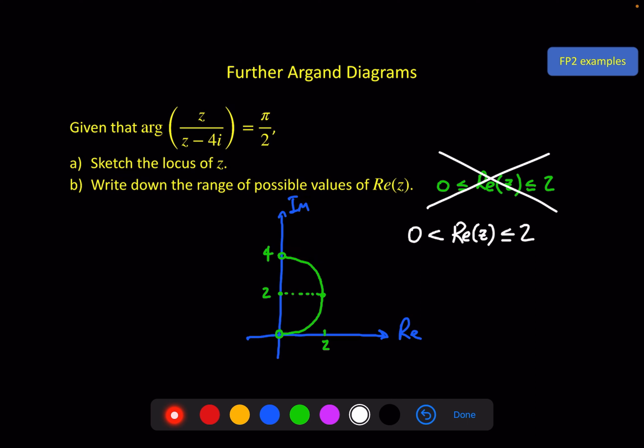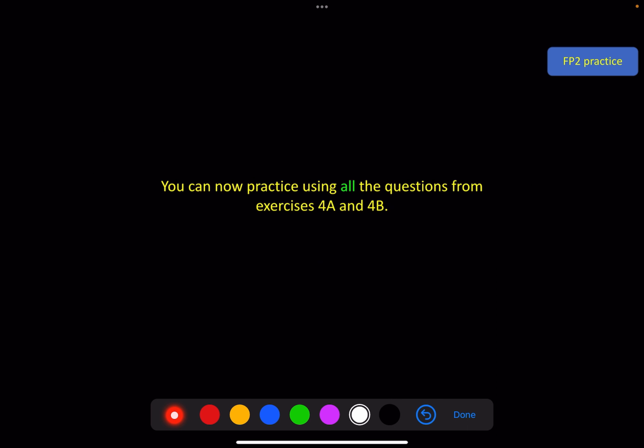And that's the end of our examples. There were quite a few there, and none of them involved the lengthy algebra process that we were doing in the previous videos, but most of them could have done and would have given you the same answer. Now, if you haven't done so already, you can have a go at all the questions from exercise 4a and 4b, and in the next video, we will look at regions on an Argand diagram. Maybe I'll see you there.